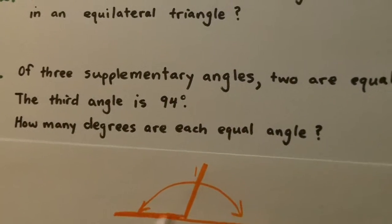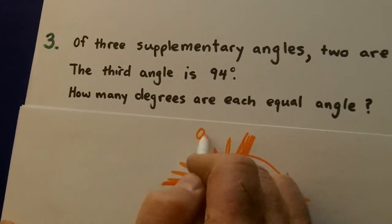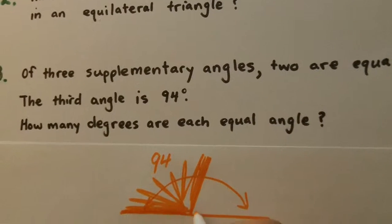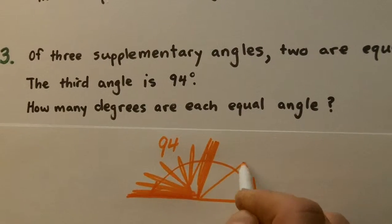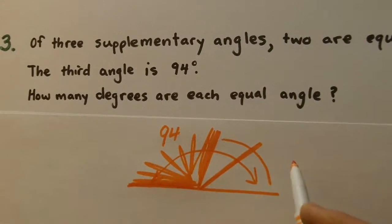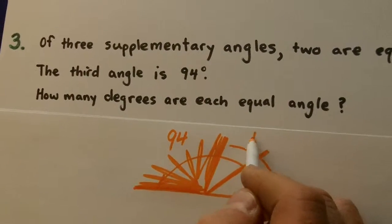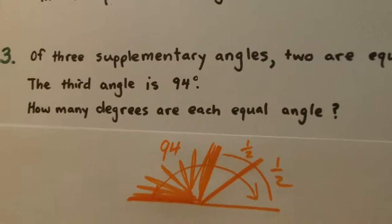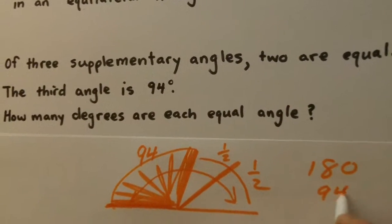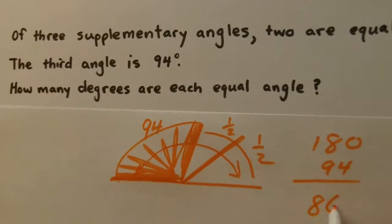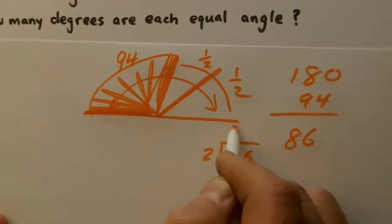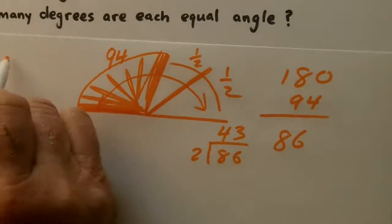Okay, now all of that is your 94. Now it says two are equal, those two are equal, so it's that remaining right here. They are the same, so they're each half of what is left. So we take 180 minus 94, that leaves us 86. Now what's half of 86? Just go two into 86 and we get 43.